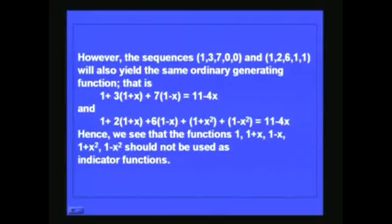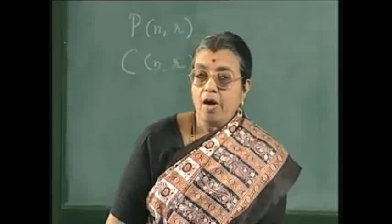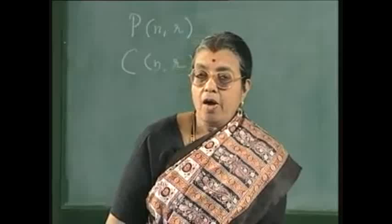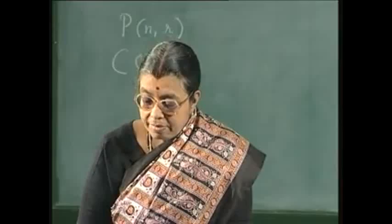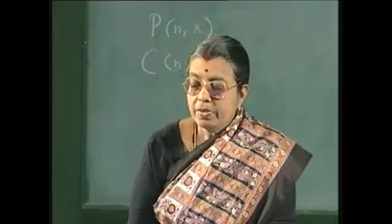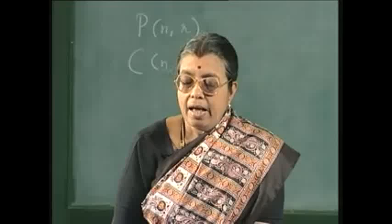The indicator functions should be such that for each sequence the expression you get is unique — each expression uniquely represents a sequence. The easy way out is to choose 1, x, x², x³, x⁴, ..., xʳ as the indicator functions. In that case the coefficient of xʳ gives you the value Aᵣ, the r-th element in the sequence, and there is only one way of doing it. So usually 1, x, x², x³, etc. are taken as indicator functions, and we shall restrict our consideration to only those sequences.